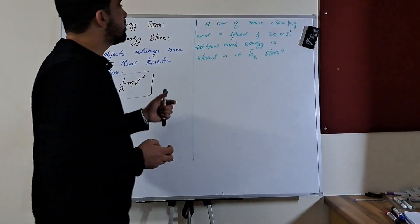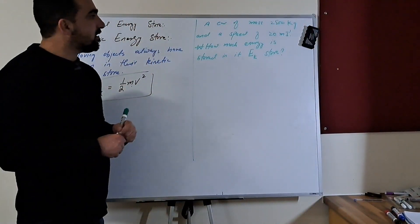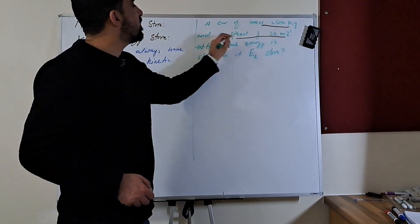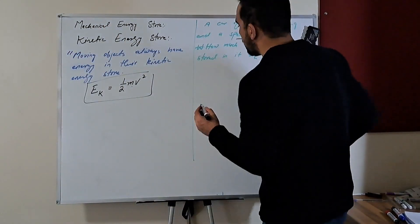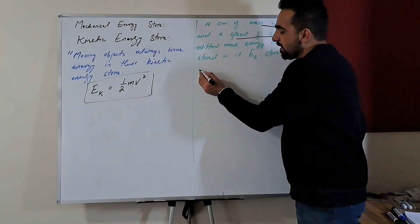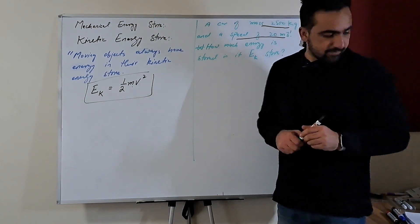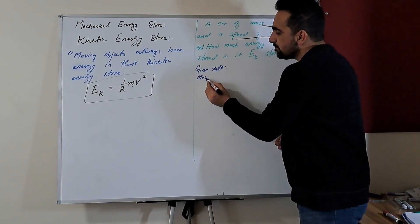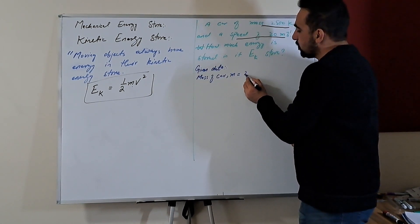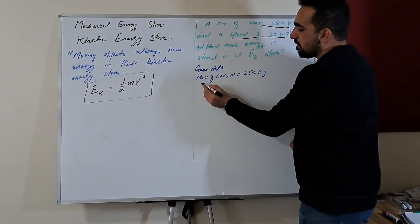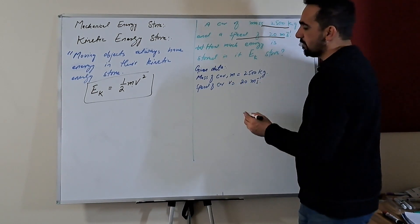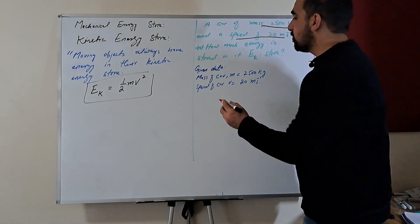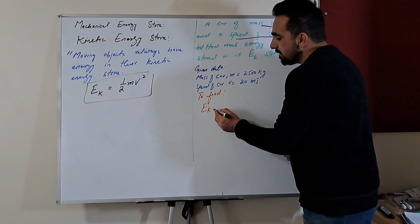So this is our problem that we need to solve. We have a car whose mass is 2500 kilogram and speed is 20 meter per second. Mass of car M is equal to 2500 kilogram and speed of car is 20 meter per second. And we need to find the kinetic energy of car, Ek.